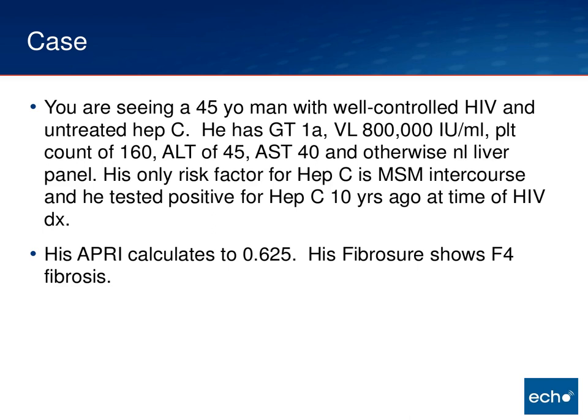So I want you to get your thinking caps on. You're seeing a 45-year-old gentleman with well-controlled HIV on an integrase inhibitor and tenofovir/emtricitabine-based regimen — a pretty standard regimen. He's got genotype 1A for hepatitis C, viral load is 800,000. His platelet count is 160, a little on the low side. His ALT is 45, AST 40, and otherwise his liver panel — albumin, bilirubin — is normal.